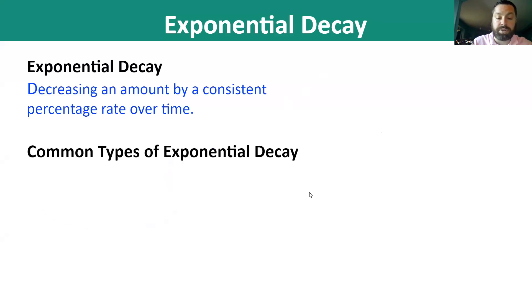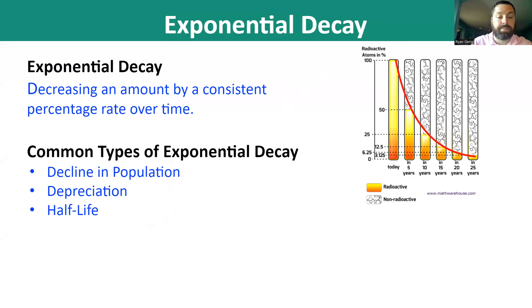Common places you'll see exponential decay: decline in population, depreciation, which means loss in value, and half-life. And this is what it'll look like, a curve downward this time.